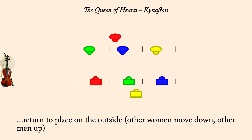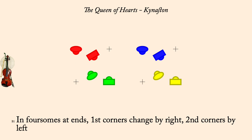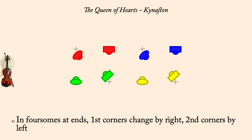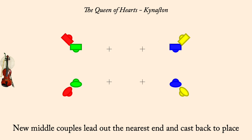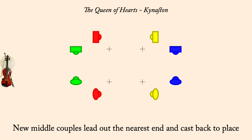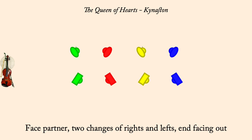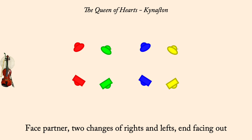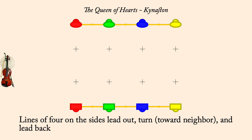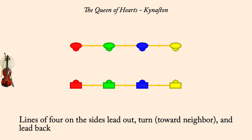First corners change by right, second by left. New middles lead out nearest end and cast back. Two changes of rights and lefts, end facing out. Lines of four lead out, turn, lead back. Ones cast to bottom as others set and lead up.